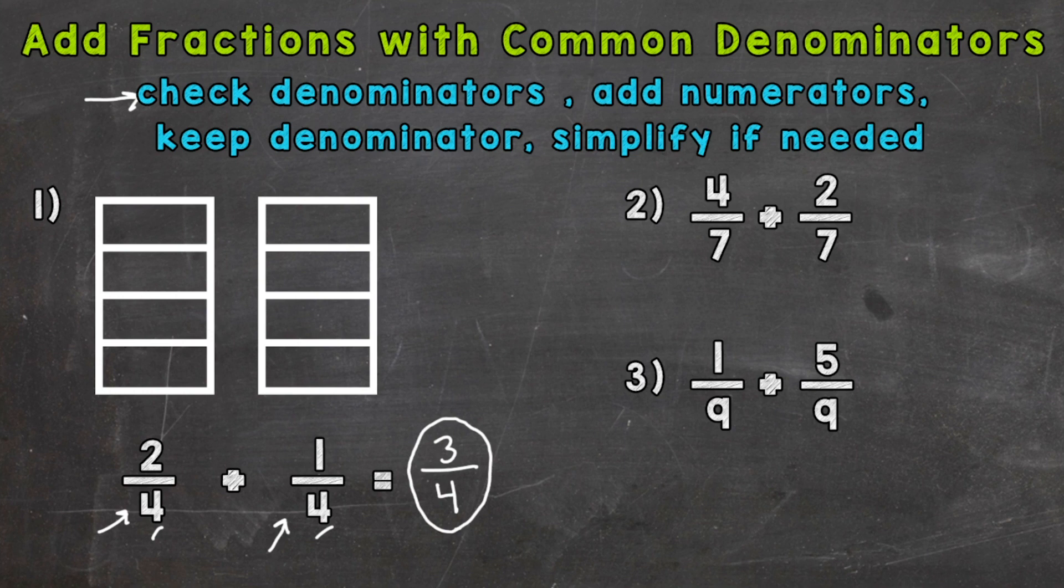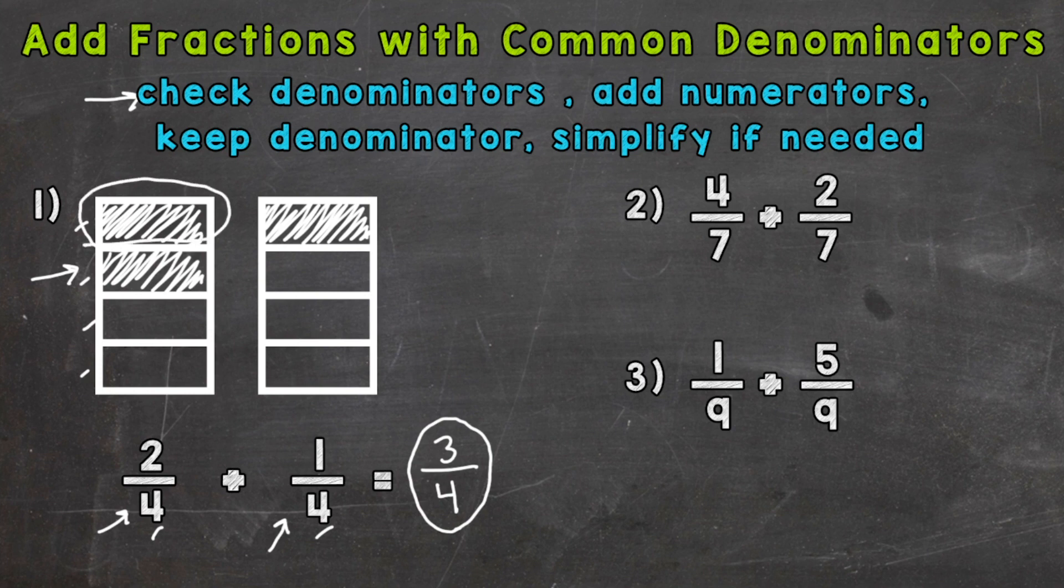So let's do this with our model here. Our first rectangle here is cut into one, two, three. It's cut into fourths. So we need to fill in two-fourths to represent that two-fourths in our addition problem. One-fourth, two-fourths. And in our second rectangle we need to fill in one-fourth to represent that one-fourth in our problem. So now how many total fourths are filled in? Well we have one-fourth, two-fourths plus the one-fourth gives us a total of three-fourths. So our model matches our answer.